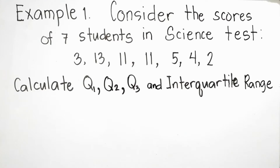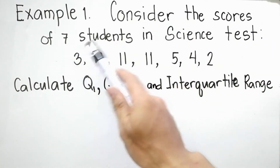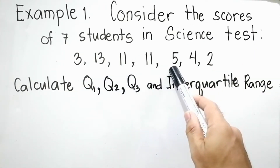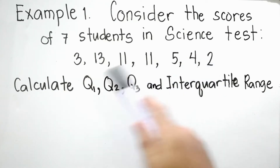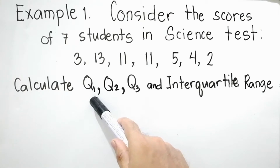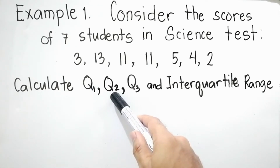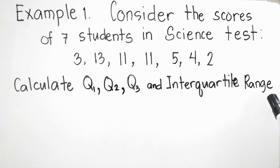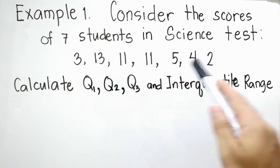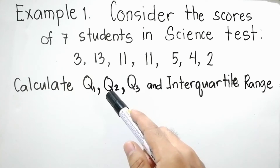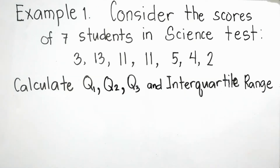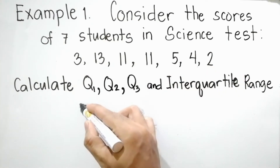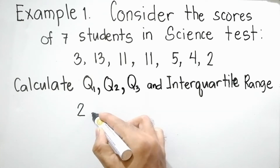Example number 1: Consider the scores of seven students in science tests — 3, 13, 11, 11, 11, 5, 4, and 2. Calculate Q1, Q2, Q3, and the interquartile range. The first step is to arrange the data observations in ascending order, from least to greatest. The list begins: 1, 2...